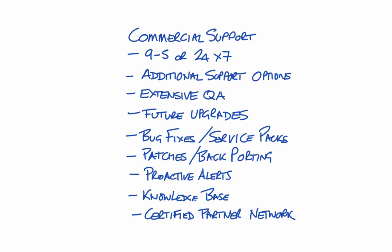Alfresco One goes through an extensive QA process. The Community Edition is tested, but it's automated testing on a single stack. Alfresco One goes through a much stricter QA process and is tested on a range of different configurations. Customers get future upgrades, bug fixes, and service packs. They get patches, and occasionally we'll backport a fix should a customer have a problem and they can't upgrade to the current version.